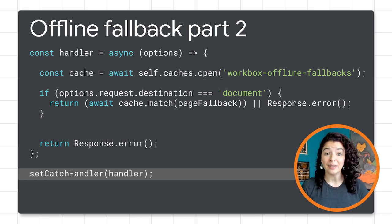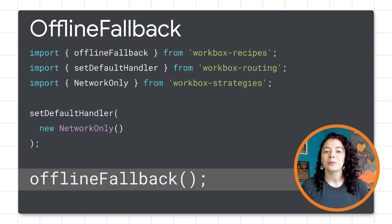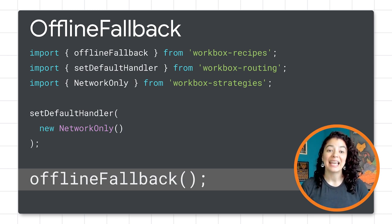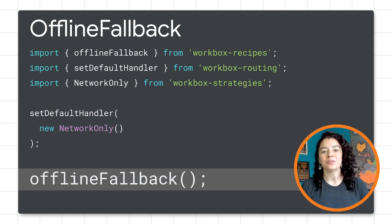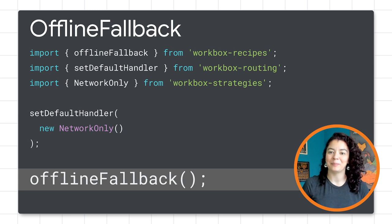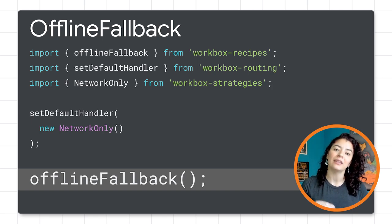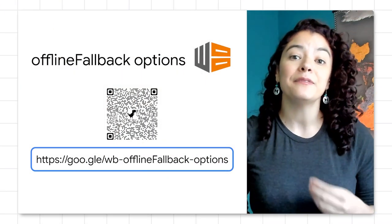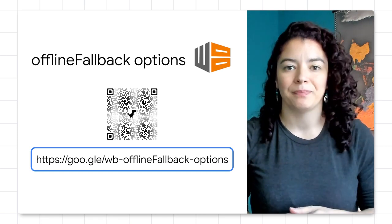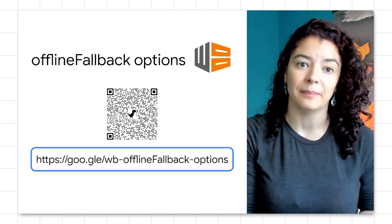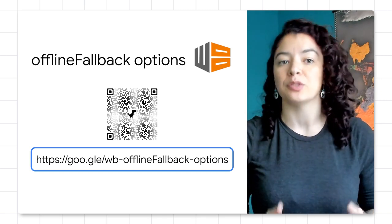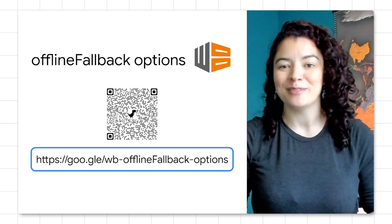This piece of code is better than implementing this behavior with only the service worker, but we can do better. With the Workbox offline recipe, that same task looks like this. This line of code does everything we described under the hood. You still need to create the fallback document that your app is going to serve. And if you don't pass any options, it will assume that that document is called offline.html. The offline fallback receives a set of options — for example, you can change the name of your offline document, and you can also add fallback options for fonts and images. Check out the documentation for more details.